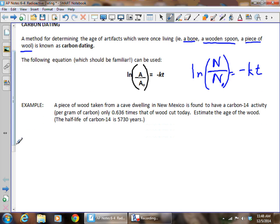So it says here we are taking a piece of wood from a cave dwelling in New Mexico, and it's found to have a carbon-14 activity, only 0.636 times that of wood cut today. So it wants us to estimate the age of wood, and it gives us the half-life of carbon-14 as 5,730 years.